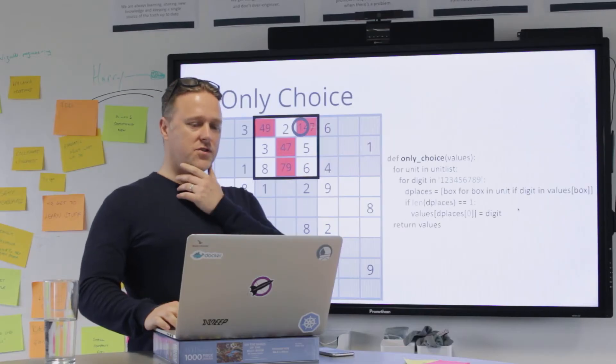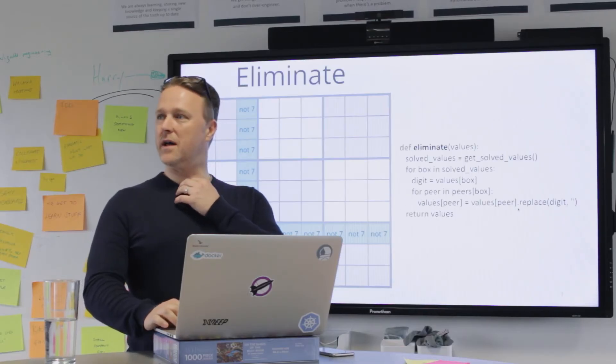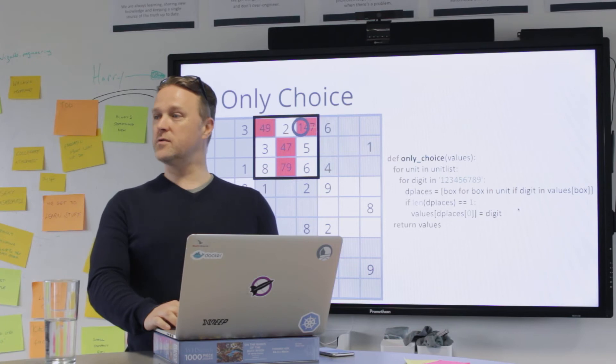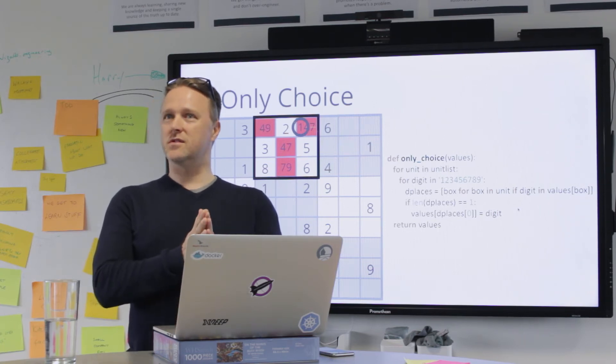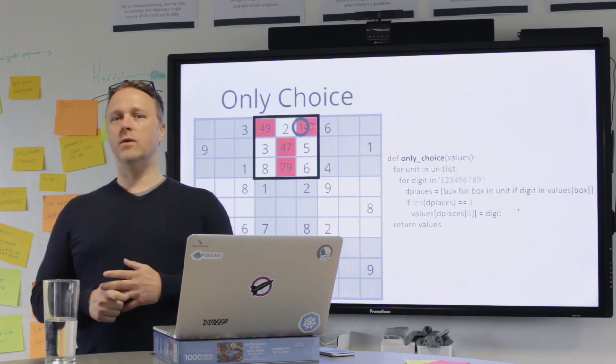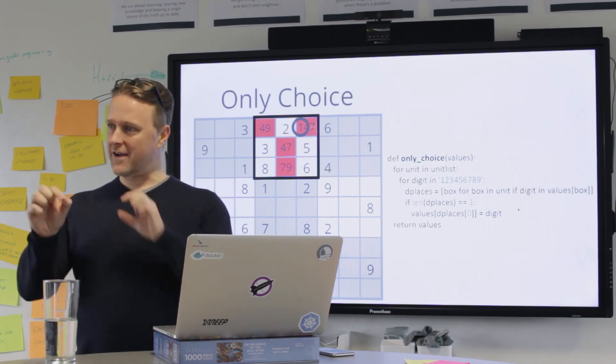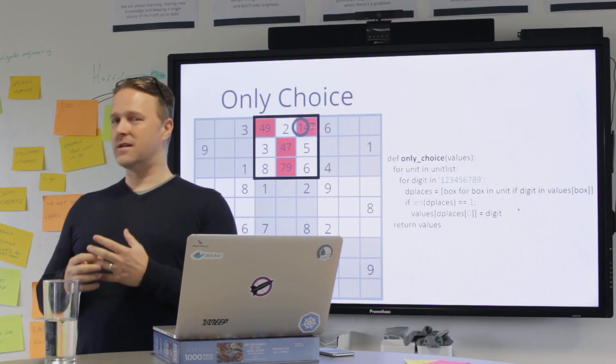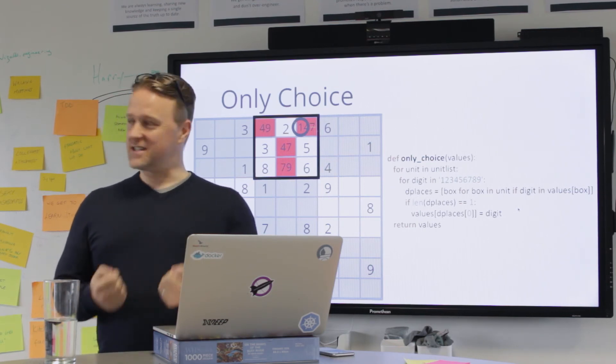So just those two constraints by themselves solved most Sudokus. Some Sudokus are still quite big after, there's still lots of permutations left. Maybe because you start with a puzzle that doesn't have many of the blanks filled in. So in essence, it's a hard puzzle.